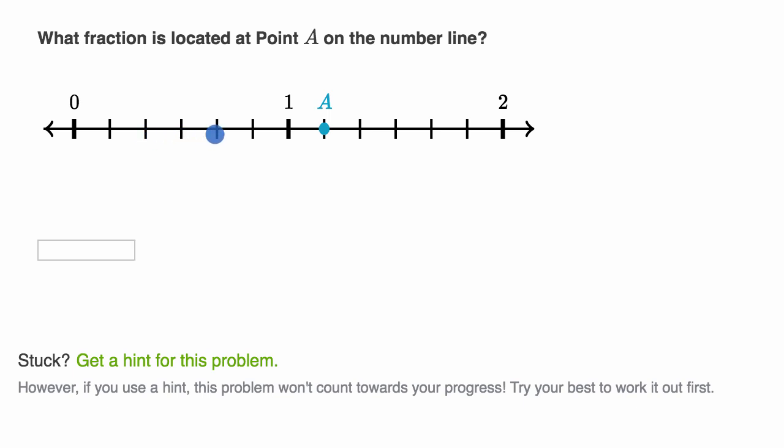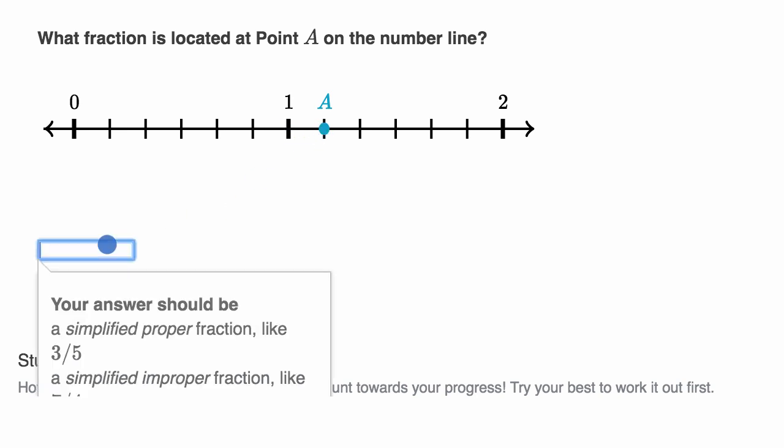So one-sixth, two-sixths, three-sixths, four-sixths, five-sixths, six-sixths, which is equal to one, and then seven-sixths. So this is seven over six. Just like that. And we are done.